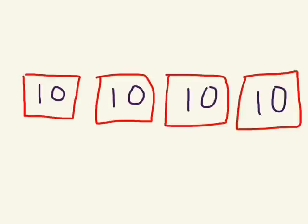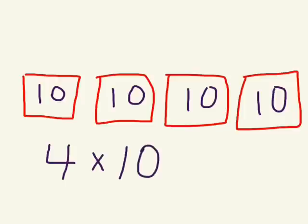Now I know the answer is going to be all of these numbers together. So I could use addition — ten plus ten plus ten plus ten — or, if you know your multiplication, you could just say four times ten equals forty.